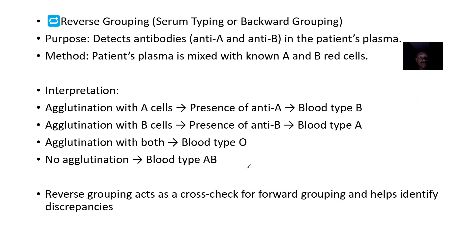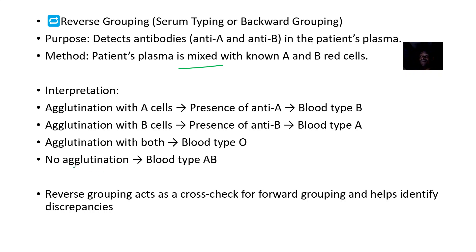Now for the reverse or backward grouping, the purpose is to detect antibodies — the forward was for antigens. The patient's plasma is mixed with A and B red blood cells. If you agglutinate with A red cells, it indicates the presence of anti-A, so it is blood group B. If it agglutinates with B red cells, indicating the presence of anti-B, it is blood group A. This is the opposite of what you get in the forward grouping.